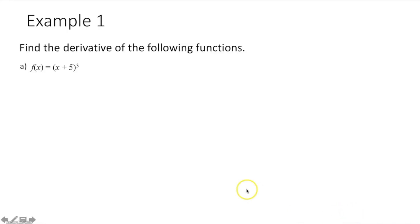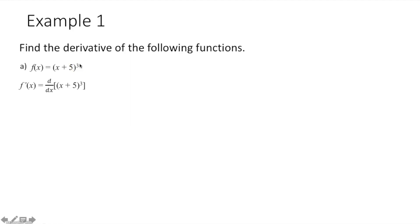It's example time. Example 1 says find the derivative of the following function. Here we have f of x is equal to the quantity x plus 5 cubed. We have a function within a function. Our x plus 5 is our inner function, and our outer function is going to be this quantity being cubed.